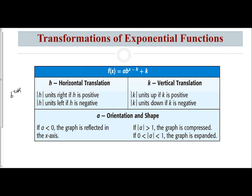If it's b to the x minus h, that means you're going to be going right h units. If it's b to the x plus h, that means your h is negative and you're going to go left h units. If you have a plus k, you're going to go up k units. If you have a minus k, you're going to go down k units.